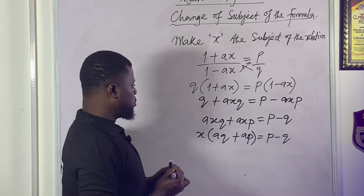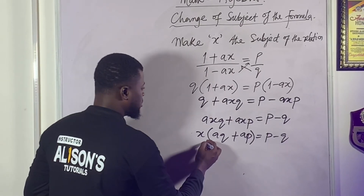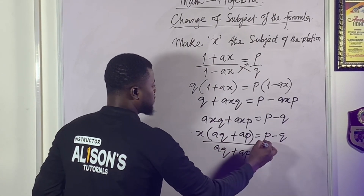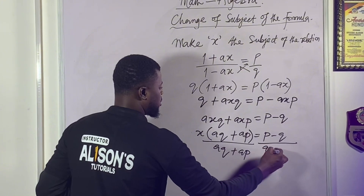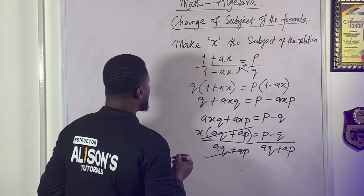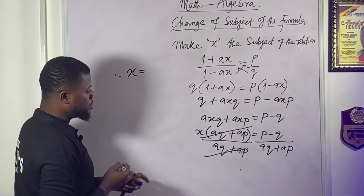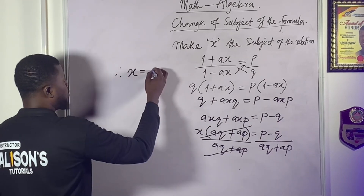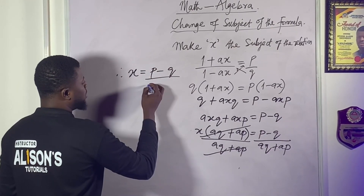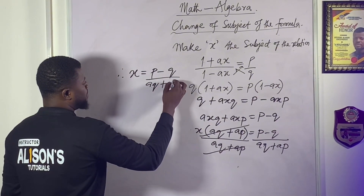This will be plus p minus q. So because we want to make x the subject of the relation, you need to divide both sides by aq plus ap. Do the same thing on the other side: aq plus ap. So these will cancel out with each other. Therefore, you have x equals p minus q over aq plus ap.